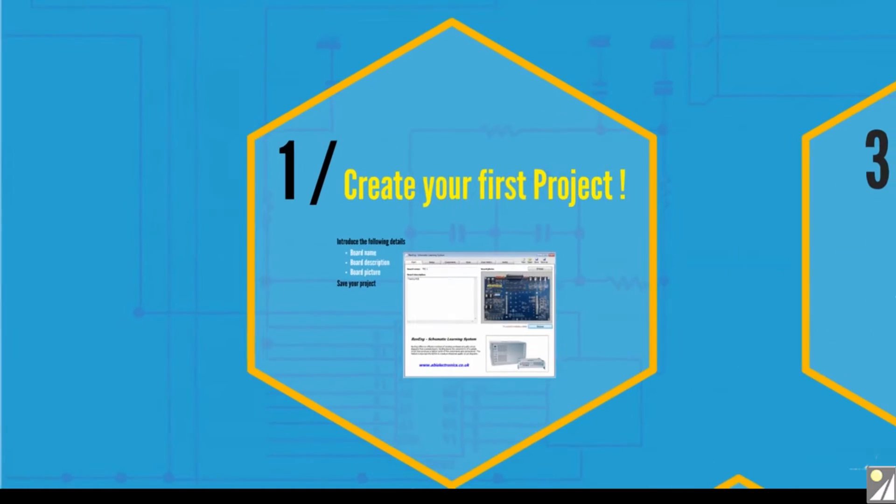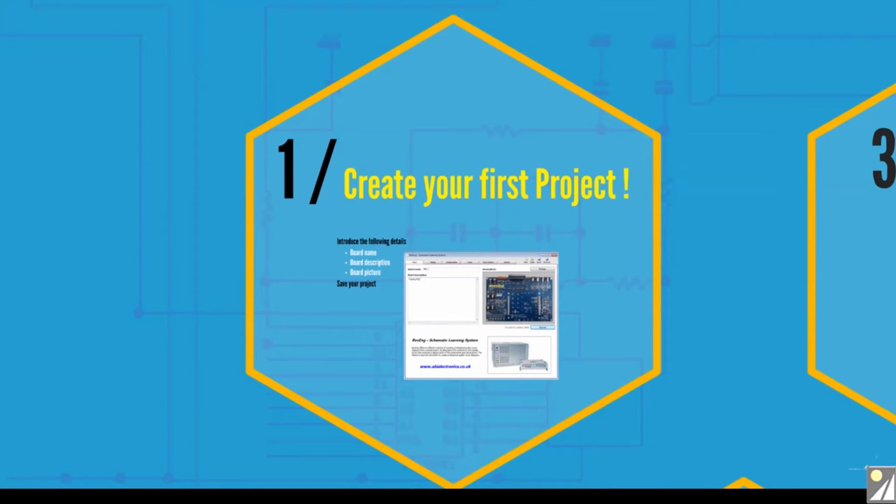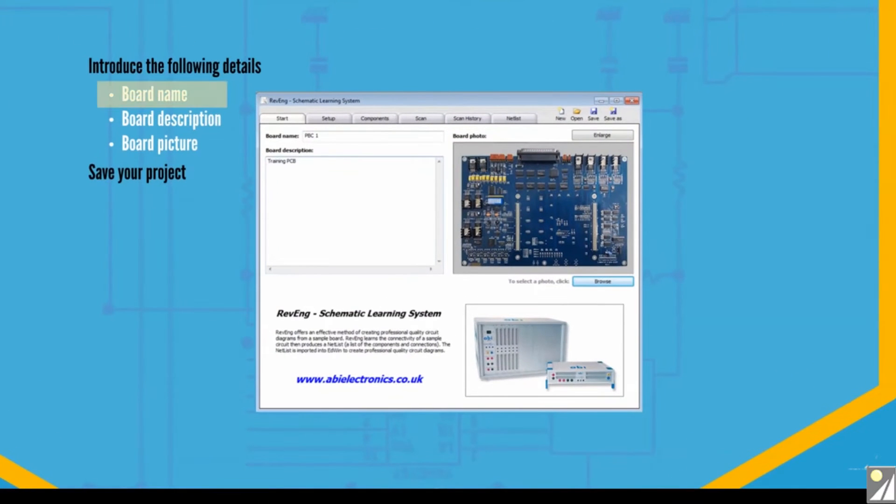First of all, run the Systemate software and create a new project in the Revenge instrument, giving a name, PCB description, and upload a photo of the circuit board.